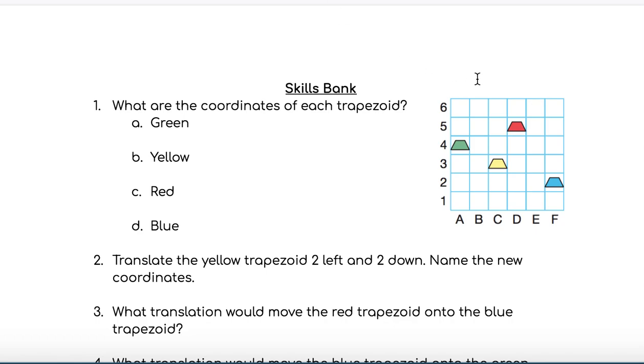For example, the green trapezoid is located here. If we draw a line straight down we can see that this is in square A, and if we look across to the y-axis we see that it's 4. So we would write this as A4. Find the coordinates of the other three trapezoids.